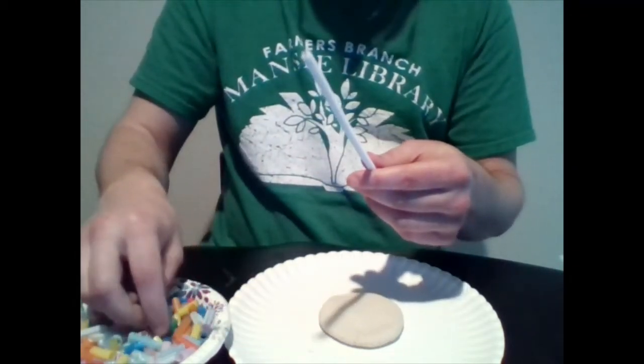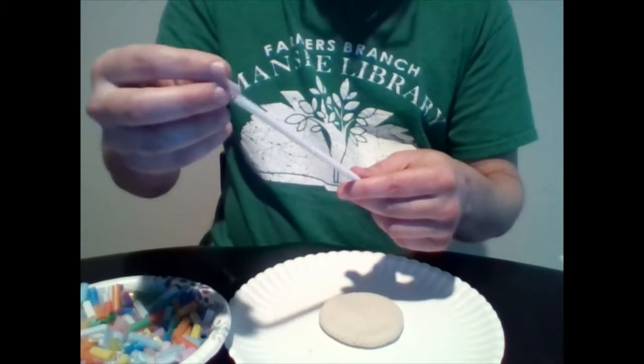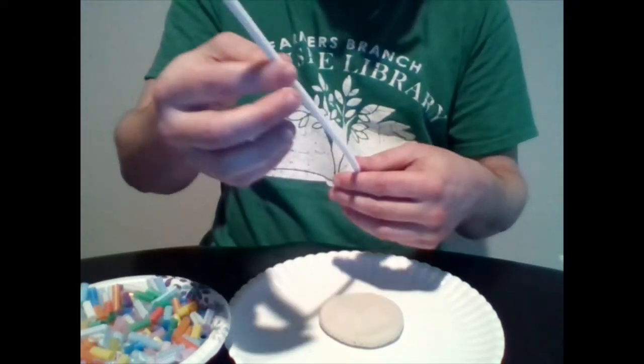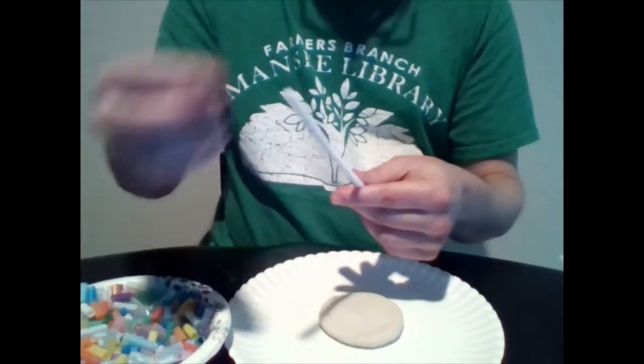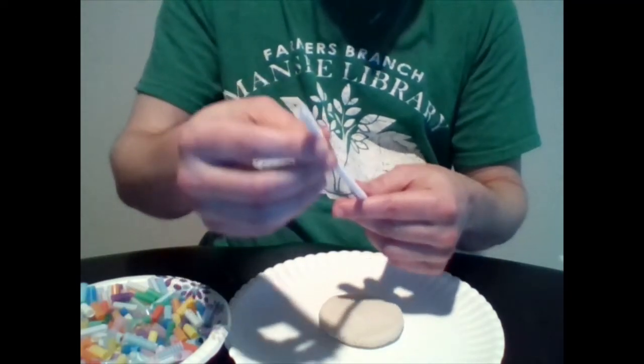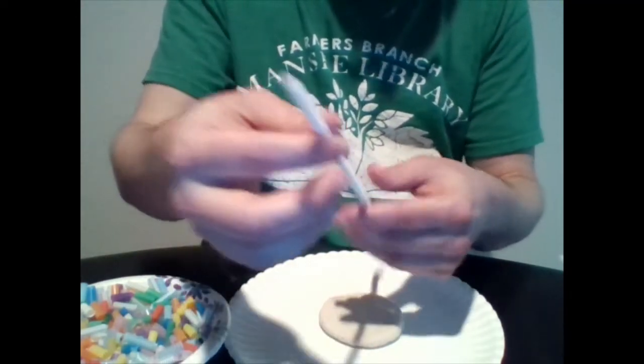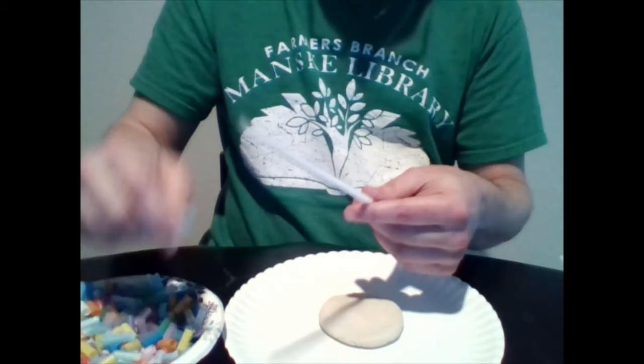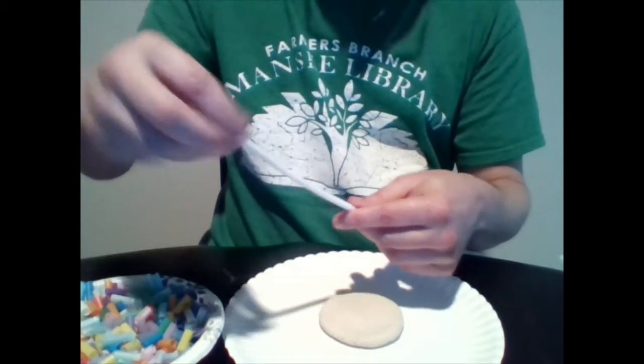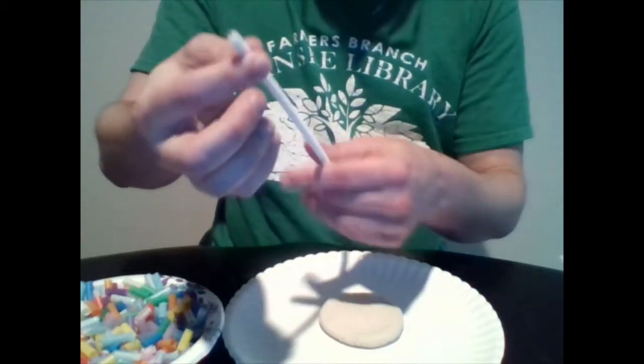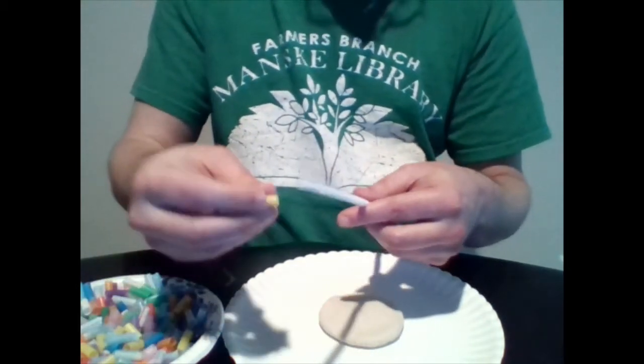Then you're going to start putting pieces of straw on and you want to put enough to cover almost the entire pipe cleaner. This may take a second. If you want to you can do like a little pattern. I'm just kind of putting on random pieces right now so if you like certain colors, by all means go ahead and use those.